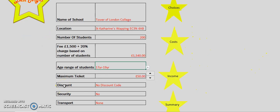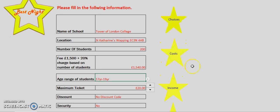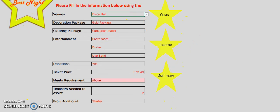The next part of my demo, I will be demonstrating how to change the maximum ticket price to £20, because not all schools can offer a high ticket price to students. Go to the information sheet and use the spinner to change it down, and then go to the choices sheet by selecting the choices tab. As you can see in the meets requirements cell, it shows above, meaning that the ticket price is above the maximum requested ticket price.